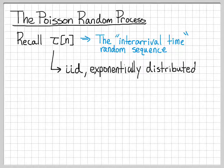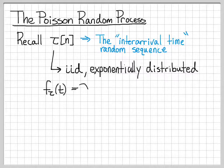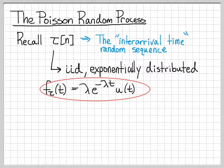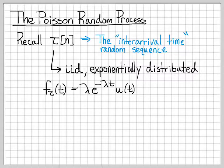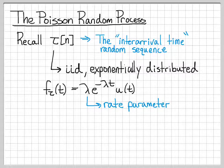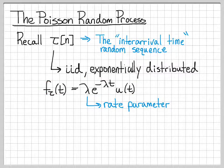Often, we model the distribution of those random variables as exponentially distributed. Arrival times are frequently modeled as exponentially distributed random variables with this probability density function. Regardless of time n, the arrival time tau has an exponential distribution. The parameter lambda is called the rate parameter and controls the numbers in this random sequence. When lambda is very large, things arrive very quickly, so inter-arrival times are very small. When lambda is very small, the rate of arrivals is very slow, meaning inter-arrival times are very large numbers.